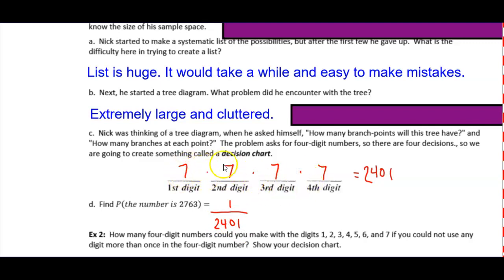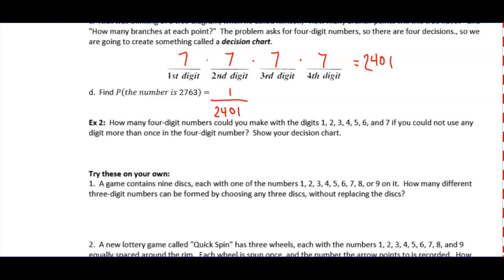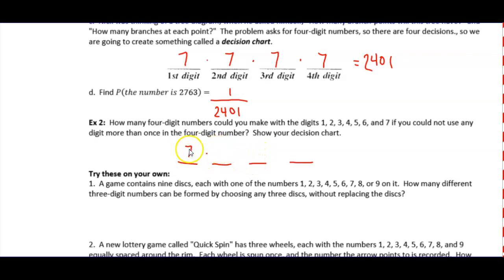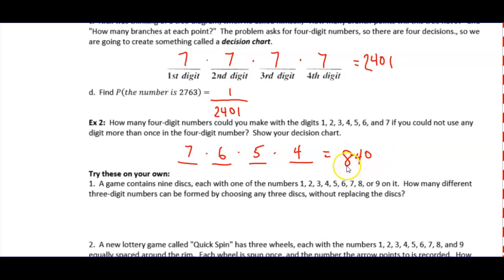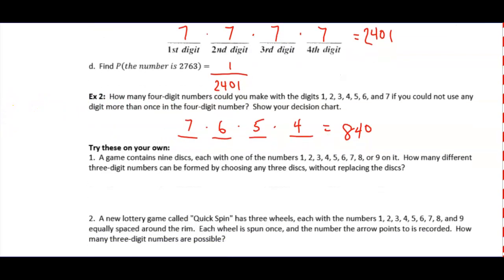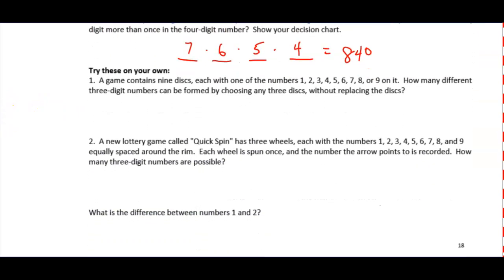If you could not use any digit more than once, the decision chart changes. Digit one could have seven choices, but since I'm not allowed to repeat, I'm down to six choices for the second digit, then five, then four. That total comes out to just 840 ways — still way too many to list or make a tree for, but that is the calculation.